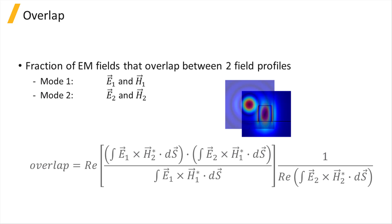The overlap, defined as a fraction of electromagnetic fields that overlap between two field profiles, is calculated using this formula, where E1, H1 are the fields from mode 1, and E2, H2 the fields from mode 2.